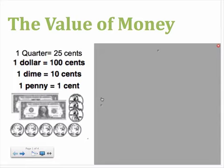We can also think of coins in terms of quarters. A quarter equals twenty-five cents. Knowing that one quarter equals twenty-five cents, ask yourself how many quarters does it take to make one dollar? If you said four quarters, you got it.